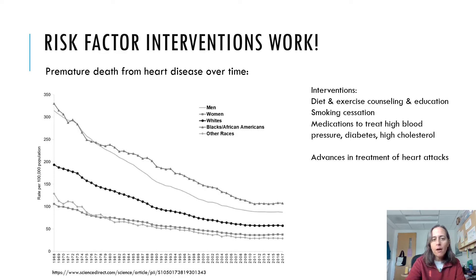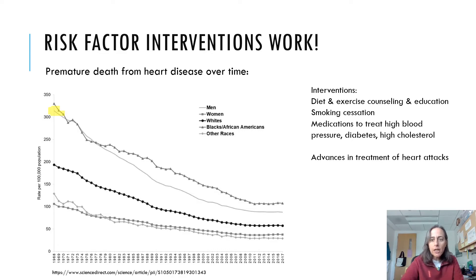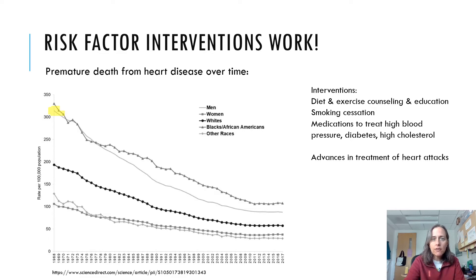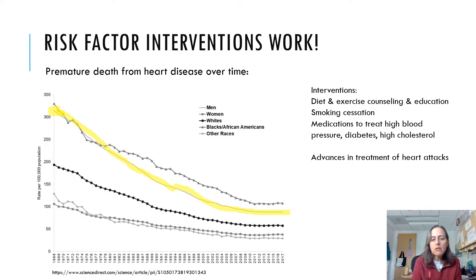This graph shows premature death from heart disease over the years. Starting in the late 1960s, the solid line representing men shows that 300 out of every 100,000 people per year were dying prematurely from heart disease in 1968. As we identified these risk factors and started putting interventions in place, look at this amazing drop — it has gone down to about 100. That's a decrease from 300 to 100, an enormous reduction in premature death.